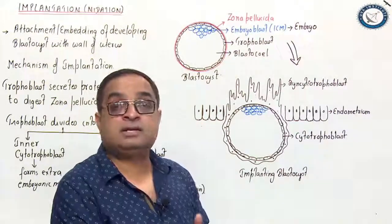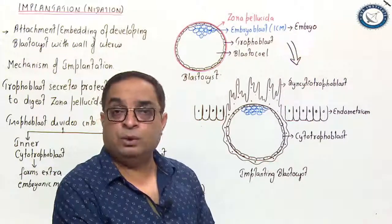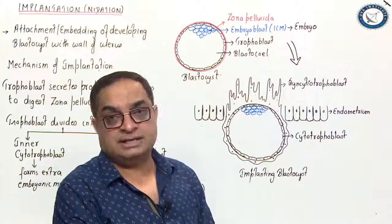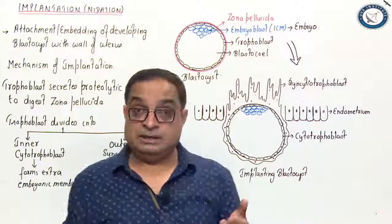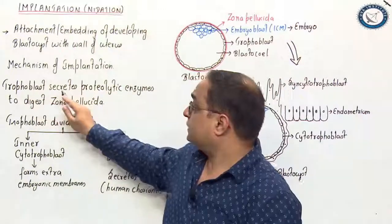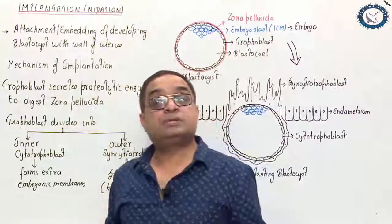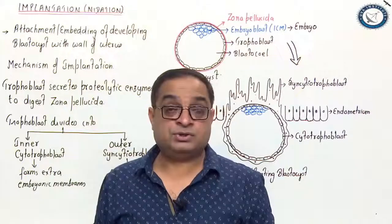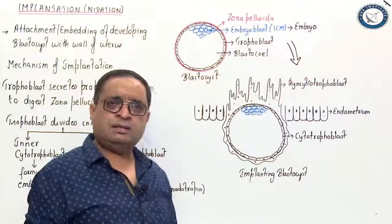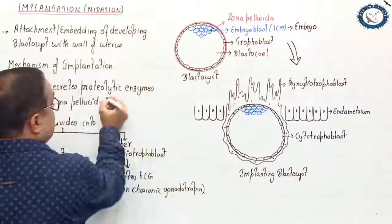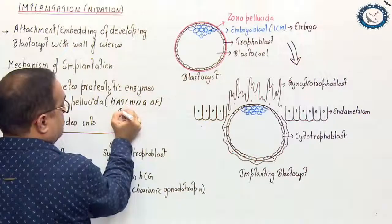If the zona pellucida dissolves in the fallopian tube itself, where fertilization has happened, then that structure will attach with the wall of the fallopian tube, resulting in tubal pregnancy. So zona pellucida remains intact here. The first step in implantation is that the trophoblast secretes proteolytic enzymes to digest the zona pellucida. The zona pellucida layer should dissolve before implantation can happen. This process is called hatching of the blastocyst.